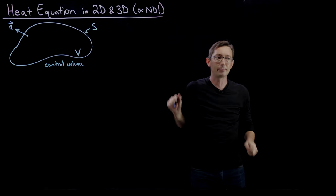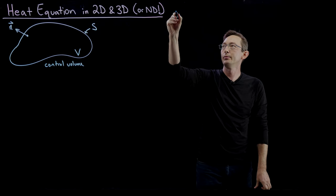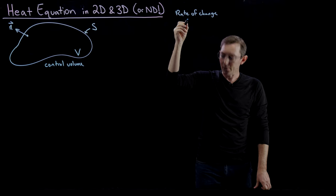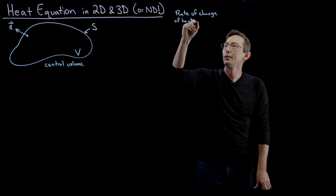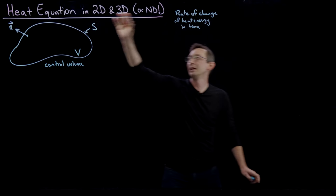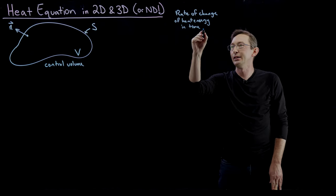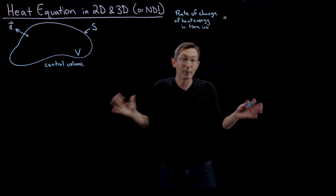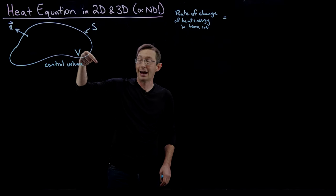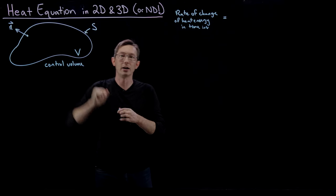The intuition we're going to use to derive this PDE is that the rate of change of total heat energy in time inside that volume can only come from a few things: heat flux through the boundary — in or out — and radiation effects or heat generation effects inside the volume.